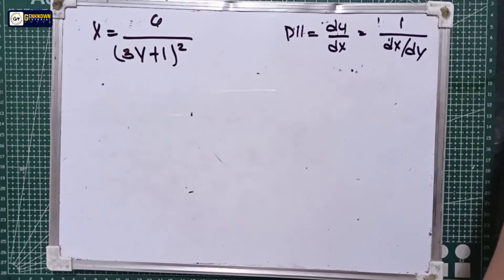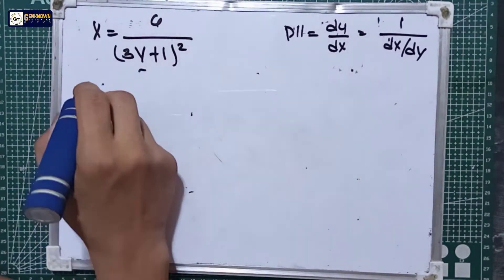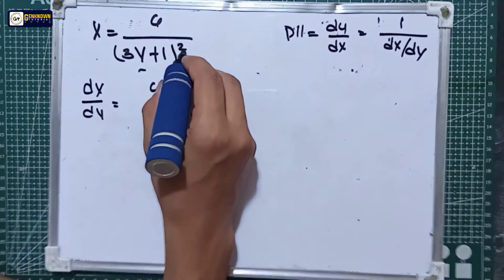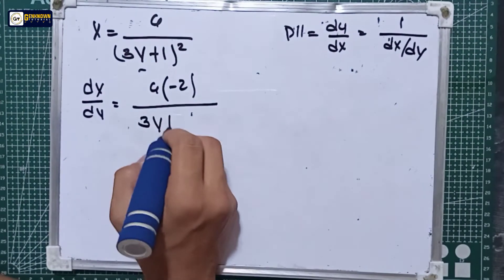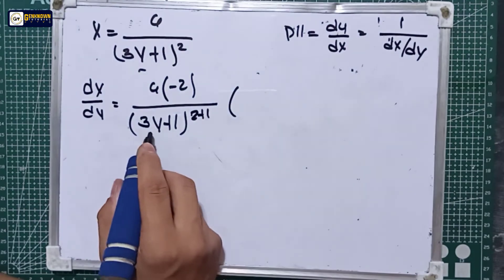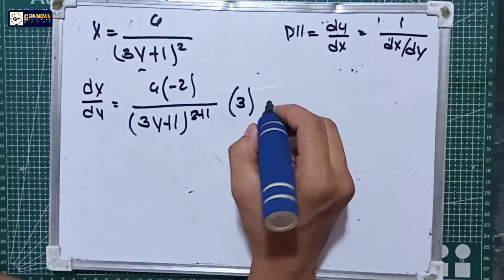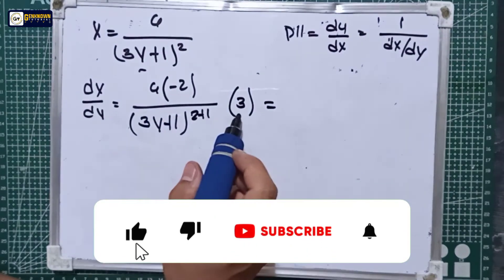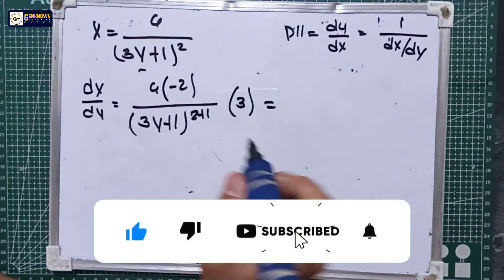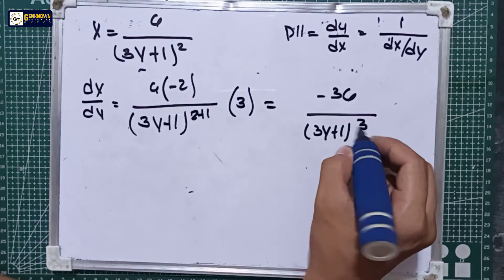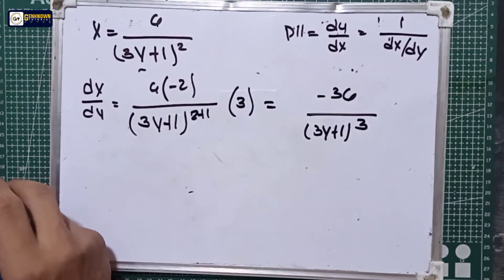We will be deriving this x function with respect to y. So dx over dy is equal to 6 multiplied by negative 2 all over (3y + 1) raised to 2 plus 1, multiplied by the derivative of 3y + 1, which is equal to 3. That gives us 6 times negative 2 equals negative 12, times 3 equals negative 36, all over (3y + 1) cubed.